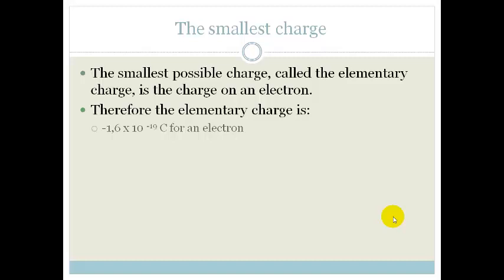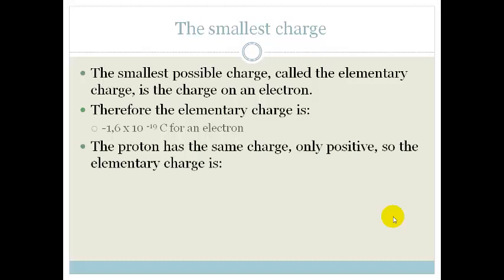So that is the charge of one electron: minus 1.6 times 10 to the minus 19 coulombs. The proton, even though it's approximately 2,000 times bigger, has the same charge but it's positive. So the elementary charge for a proton is plus 1.6 times 10 to the minus 19 coulombs.